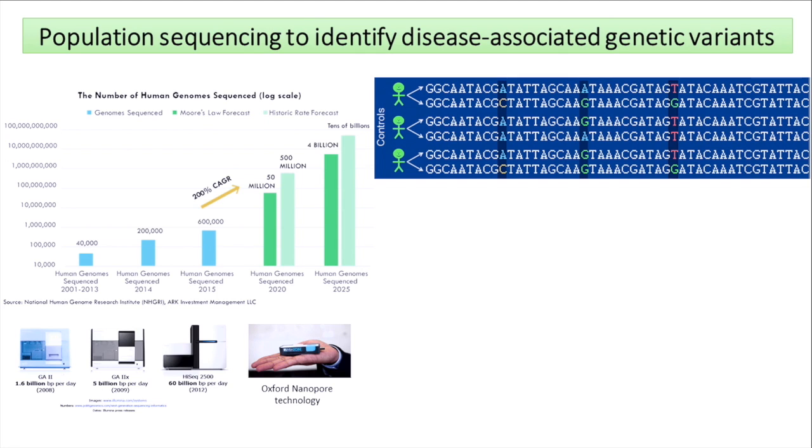That has caused an explosion in genome sequencing at the population level. We got the consensus human genome sequence, but no two individuals are alike. They differ at specific locations in the genome referred to as genetic variants. By sequencing thousands and tens of thousands of individuals, we can start identifying these locations in the genome that vary across individuals.